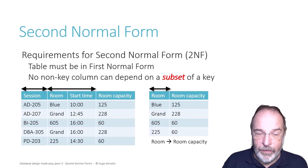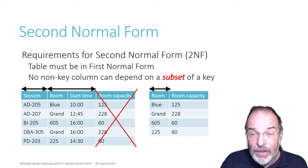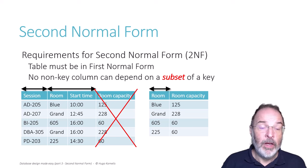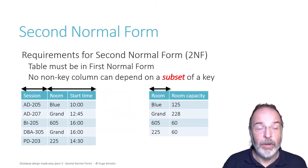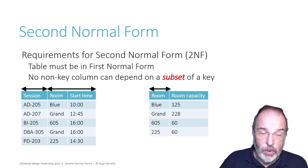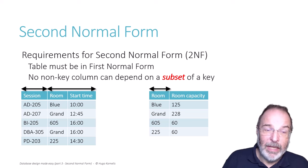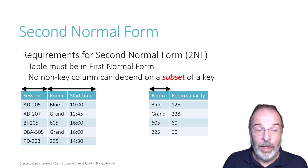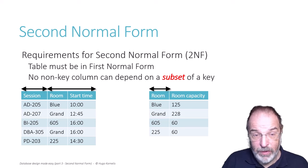Because we now have these columns in a different table, we no longer need room capacity in our original table. We still need to store it in our data model, but that's in a different table. If we need to create a report, we can join the tables together, but we don't store it that way. So we remove the room capacity column from the original table, and now it is also in second normal form by virtue of there not being any non-key columns. The left table is in second normal form because every column is a key column. The second table is in second normal form because there are no composite keys, so no non-key column can possibly depend on a subset of a key.